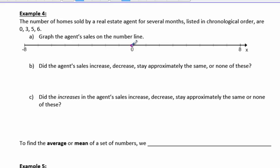So we want to graph 0, 1, 2, 3. We're just going to use a dot to graph a number. 5 and 6.